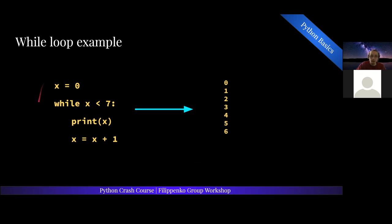To write a while loop: the keyword 'while' starts a while loop, then a condition, then don't forget your colon and tab inward on the next line. In this case, print is a built-in function that takes x as the argument and prints it on screen. Then you do x equals x plus one to increment x each time. So you get zero, one, two, three, four, five, six.